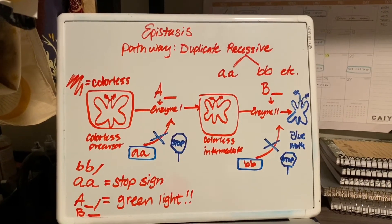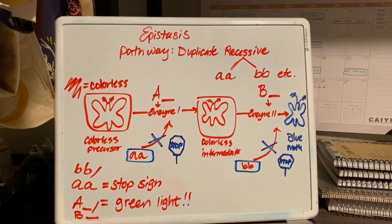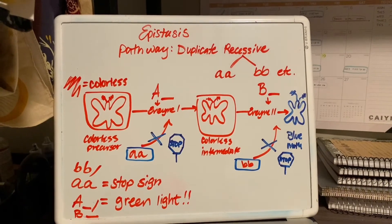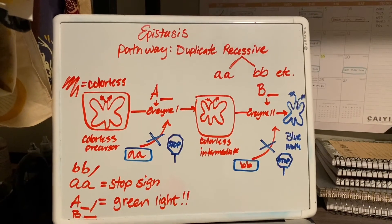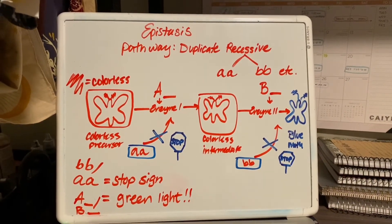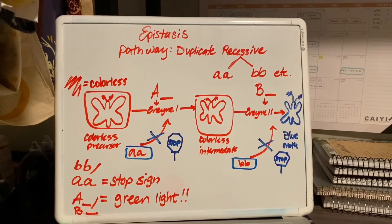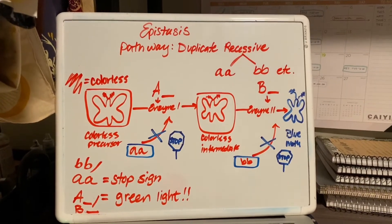Unless you have little b little b, which is your duplicate recessive, which also acts as a stop sign. So if you do have little b little b, you will stop in the pathway at the colorless intermediate. Otherwise, it will continue to give you the blue color.